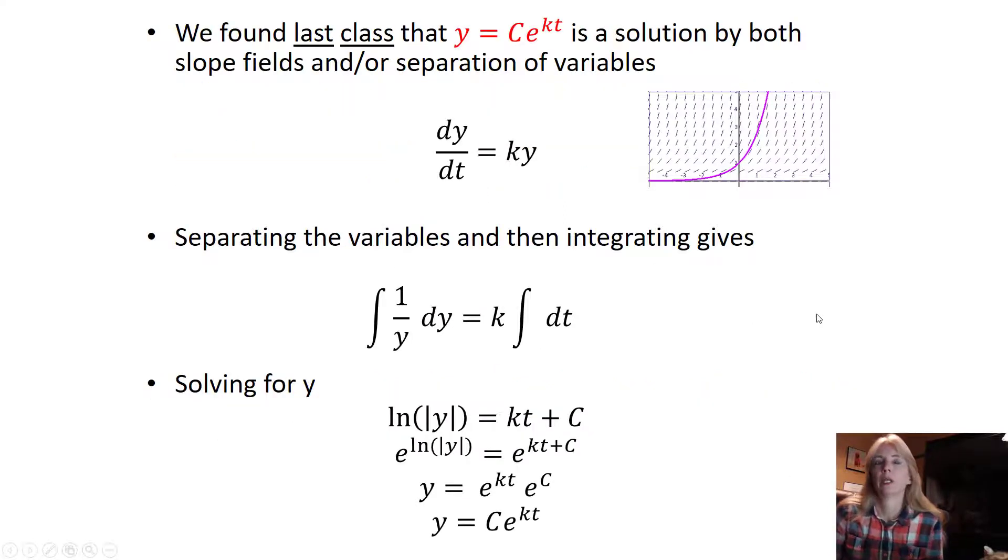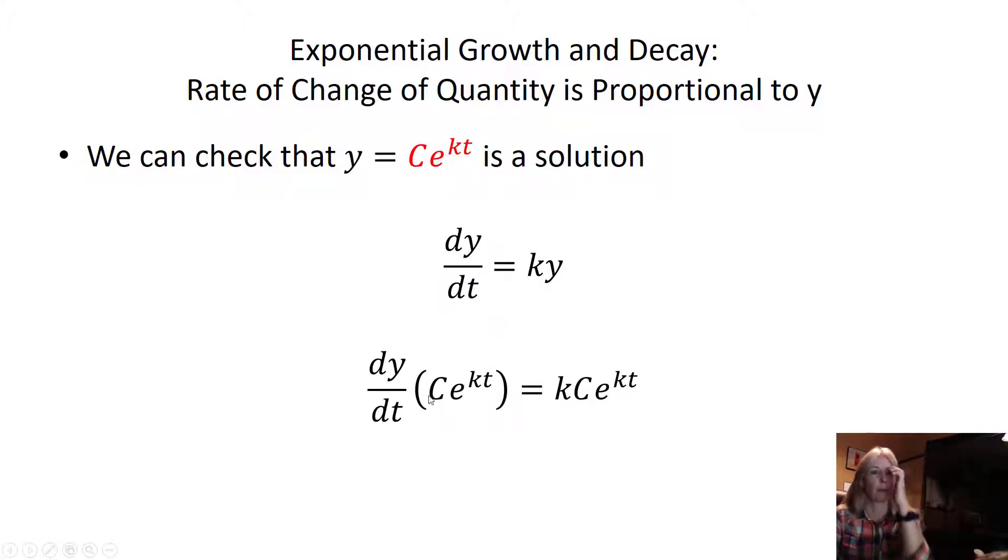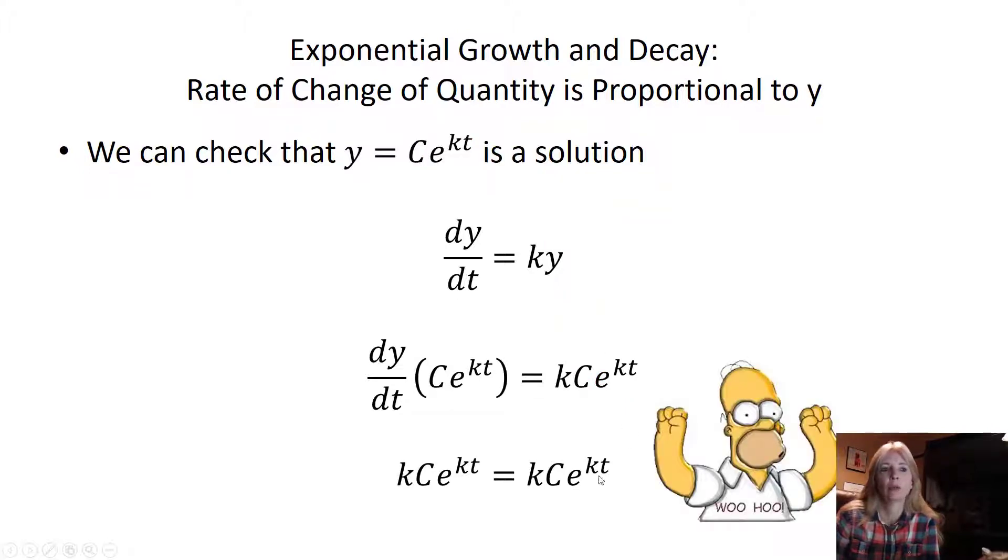So the last lecture I said I will not make you derive this again, but we went through with separation of variables where we separated our variables and we actually found this solution. We could check that this is an actual solution by taking the derivative. And when we take the derivative, remember the e to the kt, the k comes down.